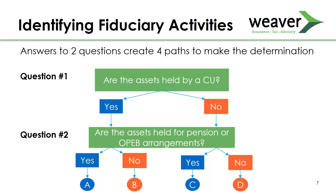This next slide gives a visual representation of how to identify fiduciary activities. It presents two questions, and based on your answers, it creates four paths for making the determination of whether or not you have a fiduciary activity, each path with separate criteria. Those two questions are: are the assets held by a component unit, and are the assets held for pension or OPEB arrangements?